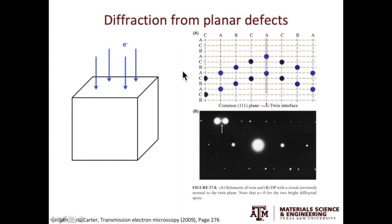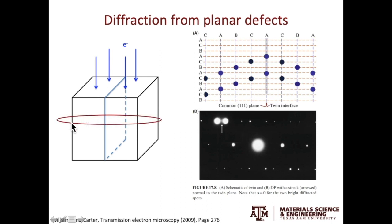We have a small volume of perfect crystal, and the electron beam comes down from the top. If we introduce a stacking fault, that stacking fault will also create a relrod. If the Ewald sphere cuts through the relrod from the center, it will give rise to streaking on the diffraction pattern projection.